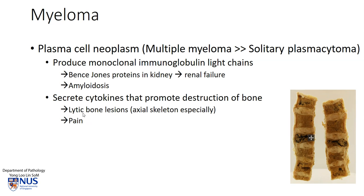This is why patients will present with bone pain as well as lytic bone lesions, and these can be seen on imaging. They're quite classical, especially involving the axial skeleton, particularly the vertebral column. They also tend to involve the ribs, the skull, the pelvis, and in very advanced cases, they can be seen in soft tissues.